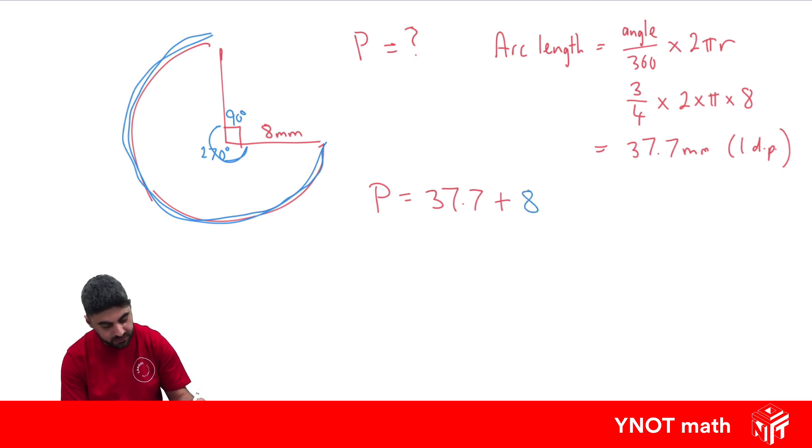So plus 8 plus 8. And all together, that's going to give us 53.7 millimetres to one decimal place.